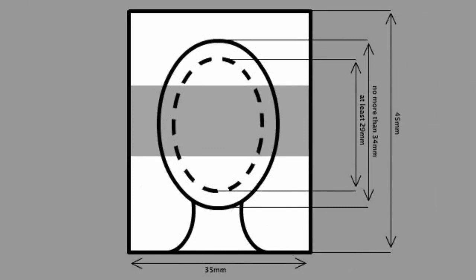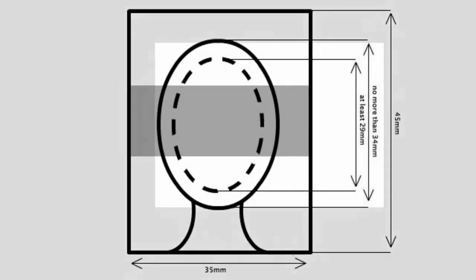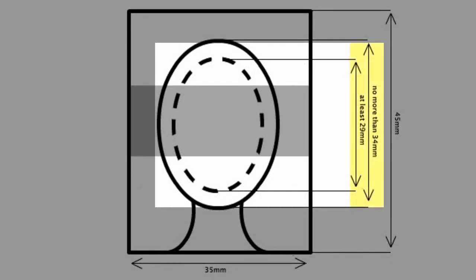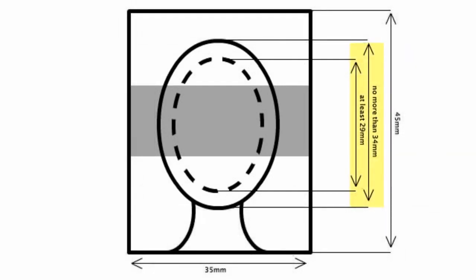The portrait must be a close up of your full head and shoulders, and from the crown of your head to your chin must be between 29mm and 34mm, no more and no less.